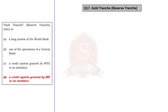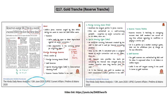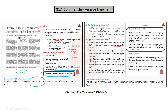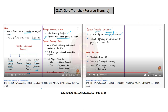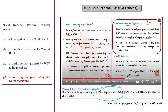The 17th question in Set A is about gold tranche or reserve tranche. During our analysis on 13th June 2020, we discussed reserve tranche and gave a practice prelims question involving it. We clearly said the reserve tranche is an emergency account that IMF members can access at any time without agreeing to conditions or paying a service fee — it is the portion of a member country's quota that can be withdrawn free of charge at its own discretion. We also discussed this on 6th December 2019, and again on 19th September 2020. By this we can easily and directly arrive at the correct answer, which is Option D — a credit system granted by IMF to its members.